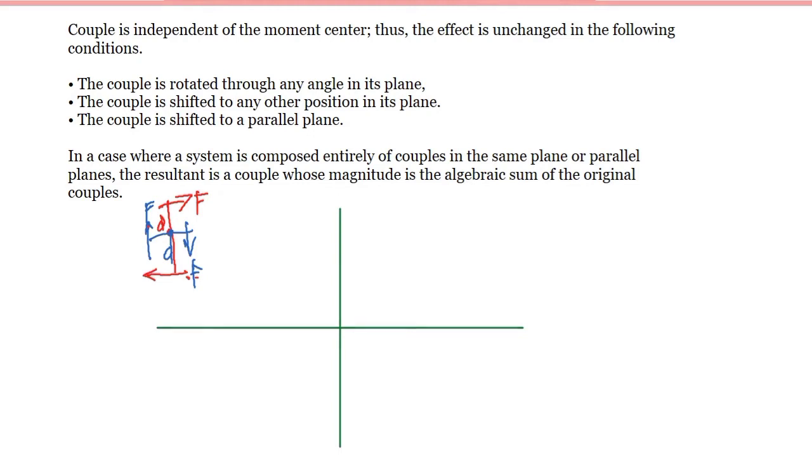And also, it will be unchanged if the couple is shifted to another position. So for example, this is the location of the couple and we are going to transfer them here. Now changing the location or the position does not change its magnitude. So still this would be the couple, which is force times distance.